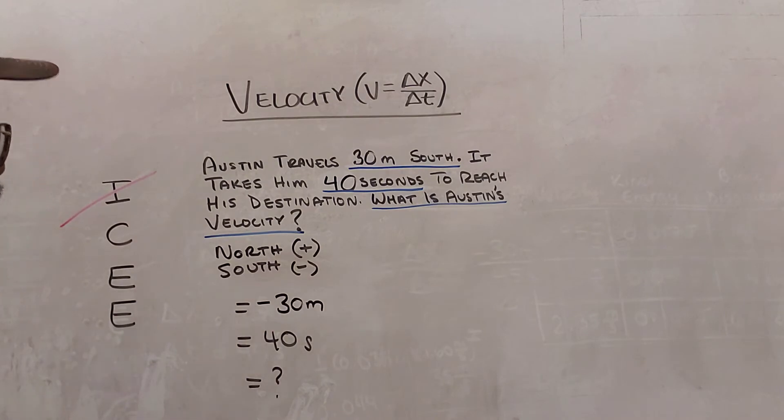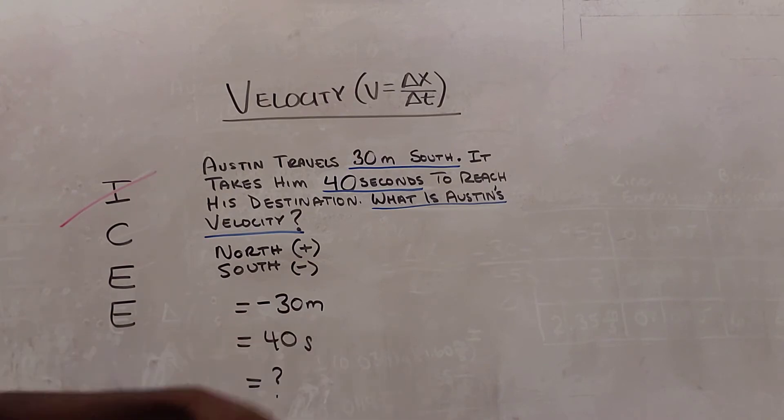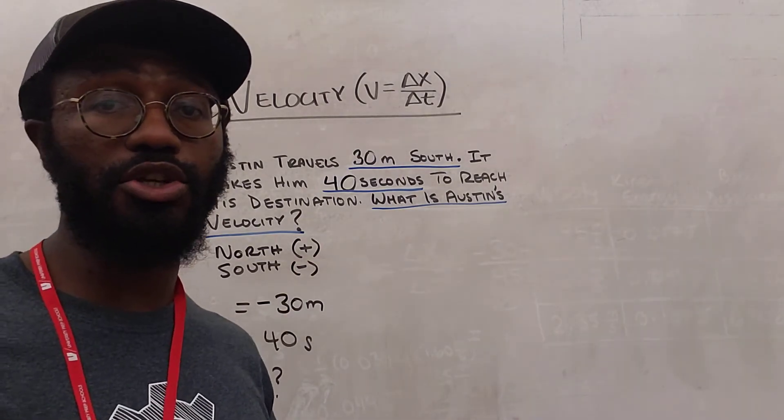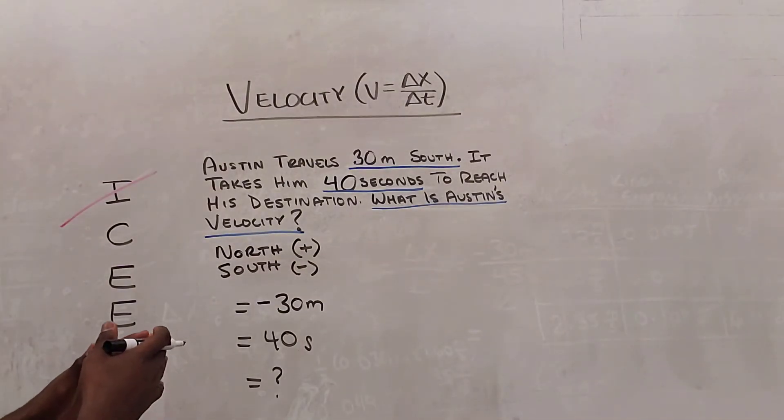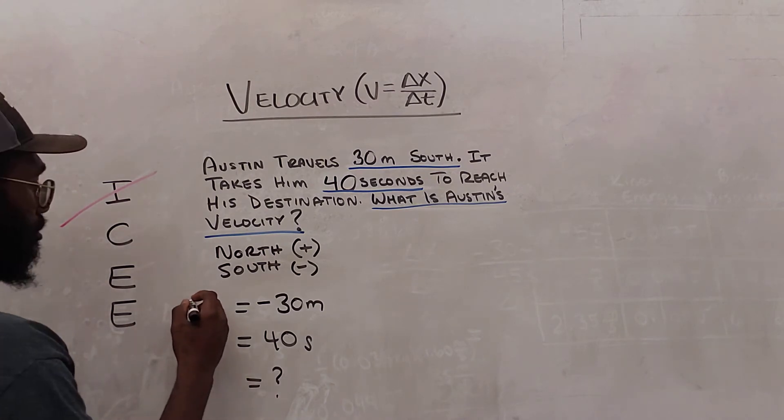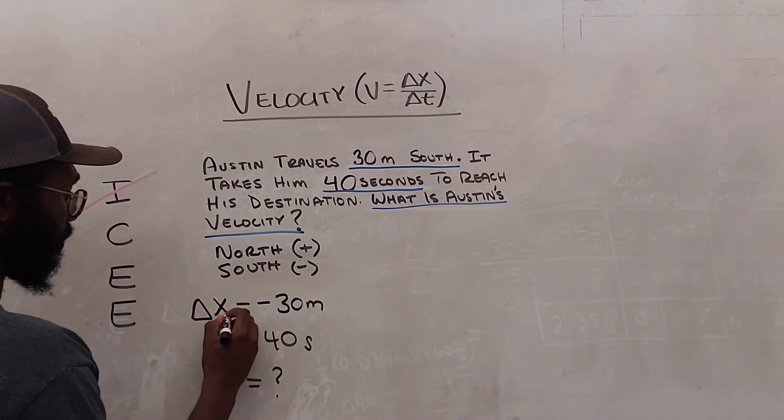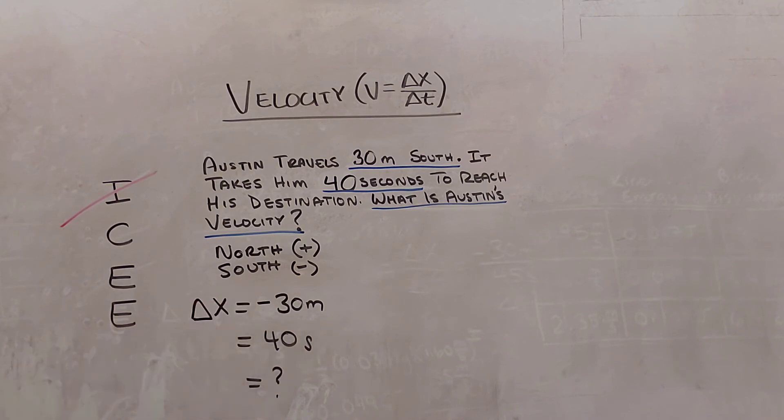Excellent. So now I see negative 30 meters or 30 meters south is how much Austin traveled, how far Austin traveled. And we're going to categorize that. So this meters tells me that this is going to be position or displacement. And because this is a distance that Austin traveled, we're going to go ahead and mark this as displacement, because we have the direction and we have the distance traveled, the direction being represented by the negative sign.